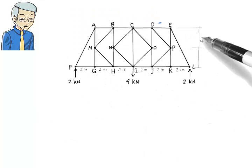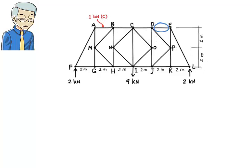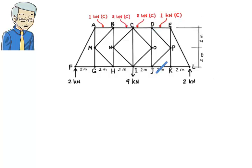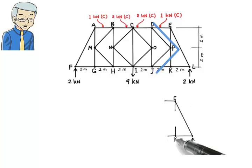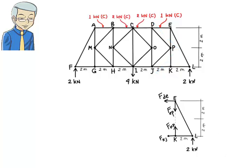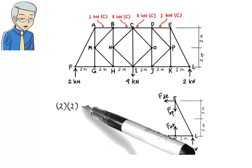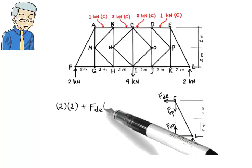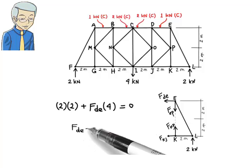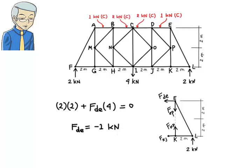To find the force in member DE, we can either take advantage of the symmetry of the system — which tells us FDE equals FAB — or use the method of sections by cutting the truss appropriately. Here is the free body diagram for the right substructure, and the moment equilibrium equation written about point K. Solving it, we find that just like member AB, DE carries a compressive force of 1 kN.